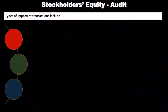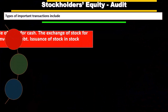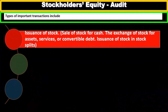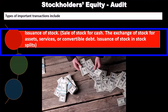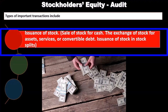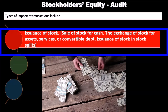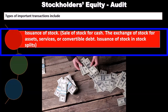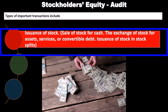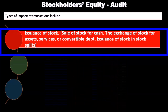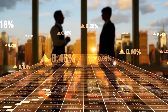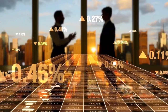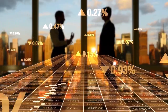Types of important transactions related to stockholders' equity will include the issuance of stock — sale of stock either for cash or the exchange of stock for assets, services, convertible debt, or issuance of stock in a stock split. One of the key components would be if there's issuance of new stock.